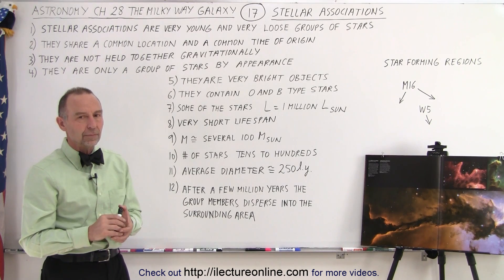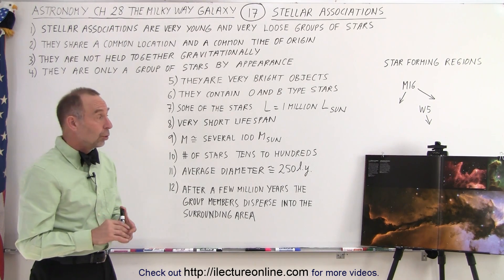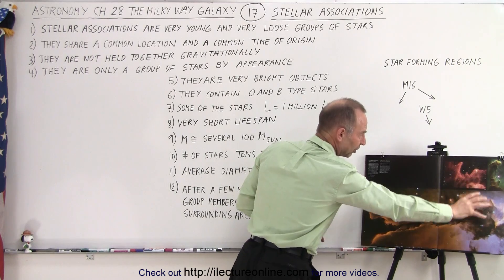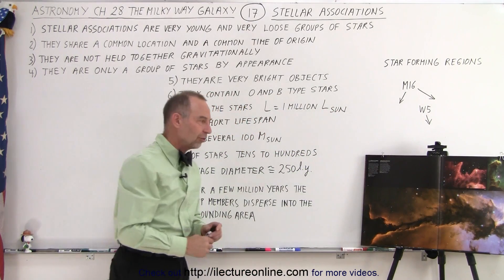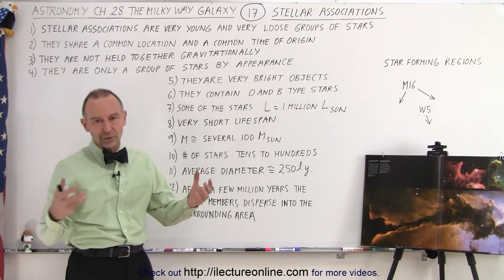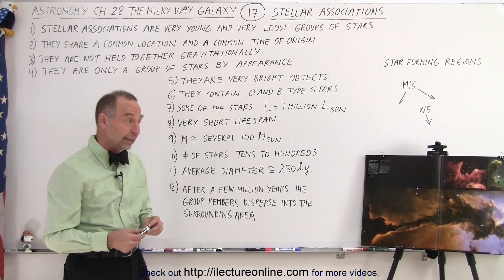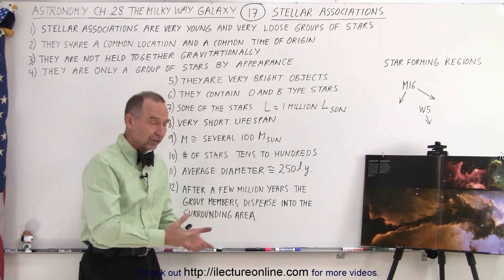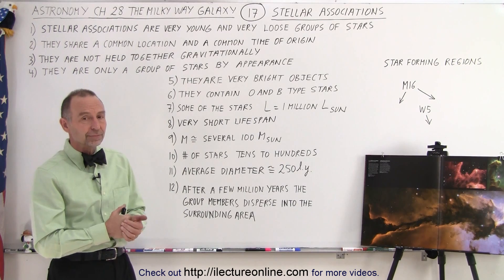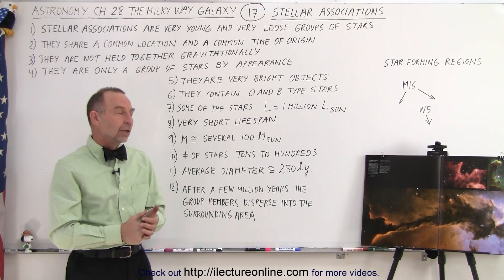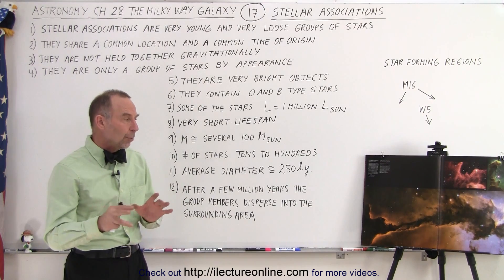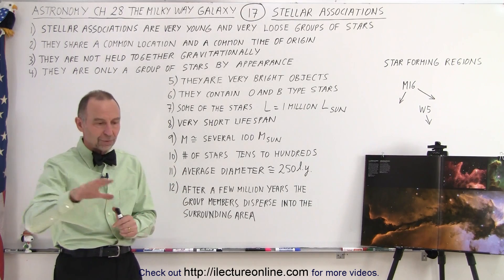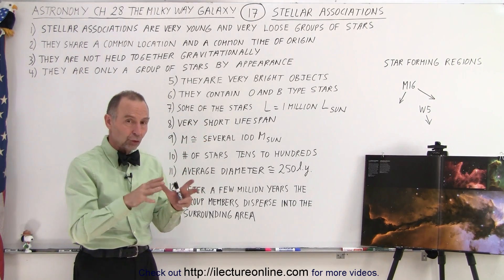Are they stars at all? Yes — the stellar associations are the stars, but the regions where they're formed are these enormous dust lanes where stars are being formed gravitationally. Some of these associations haven't even turned into stars yet — they're still T Tauri stars. So will they become open star clusters? The answer is no. There are definitely three different types, and associations do not turn into open clusters.